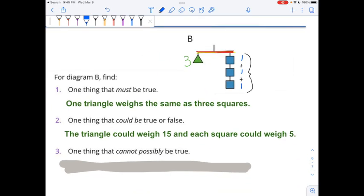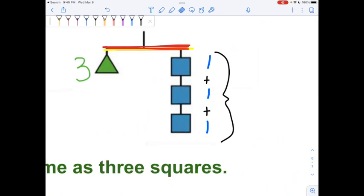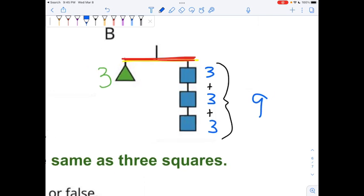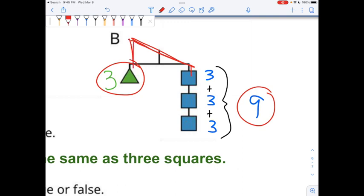Alright, and then the last one. One thing that cannot possibly be true. One square and one triangle cannot possibly weigh the same. Alright, so let's just go right into this example. If the triangle weighs 3, then each square can't weigh 3. Because 3 plus 3 plus 3 is 9. And 3 on the left side is not the same as 9 on the right. Alright, if we were to do this, the hanger would start tilting down towards the triangles.